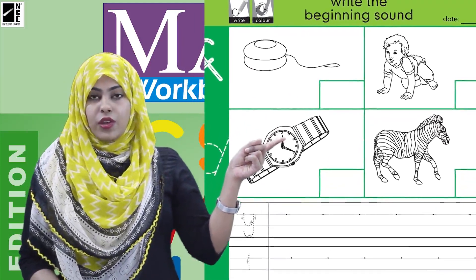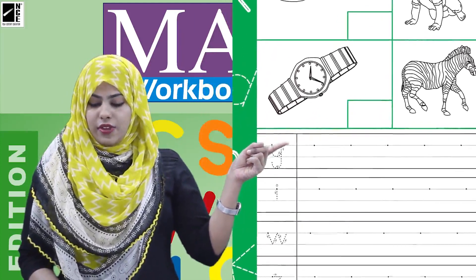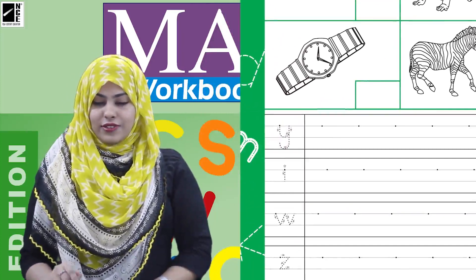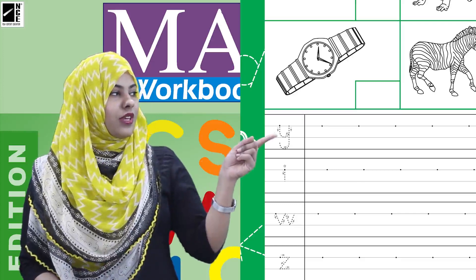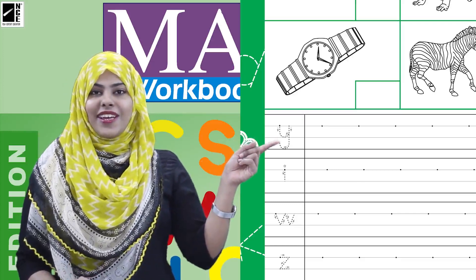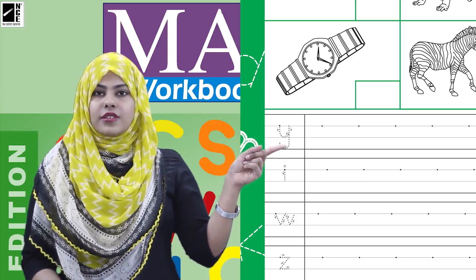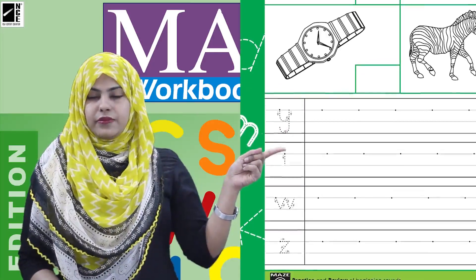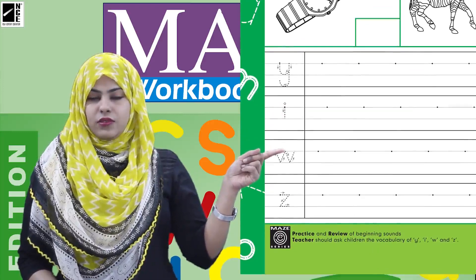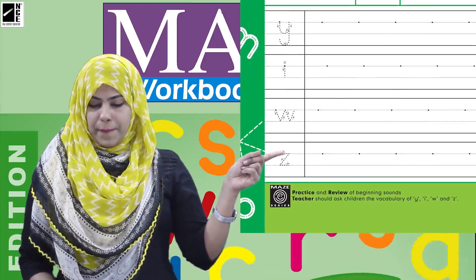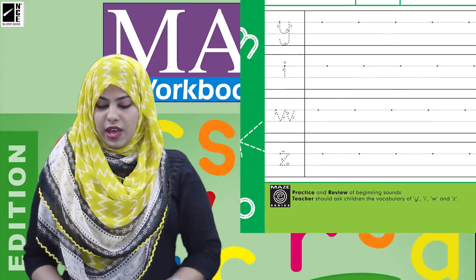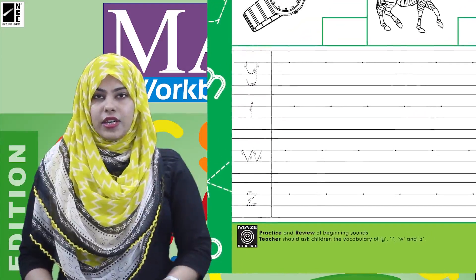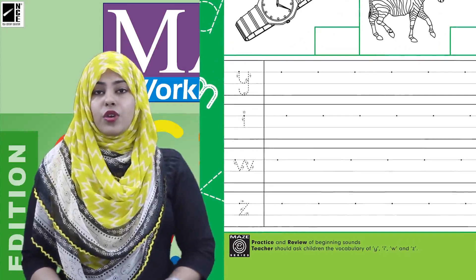over here, kids. What are we going to do? Below here we have some sounds. Look carefully, we have the same sounds we have to write above, but we are going to trace the sounds over here, which is 'y', 'i', 'w', 'z'. So we have these sounds, and when we have traced them with the help of a pencil, what are we going to do?